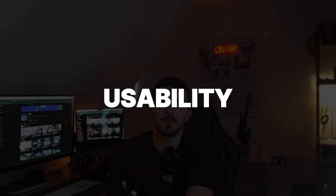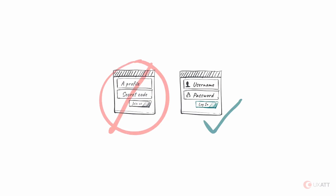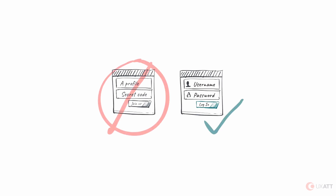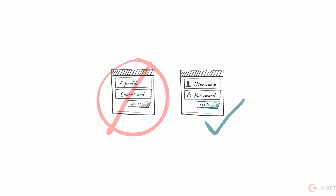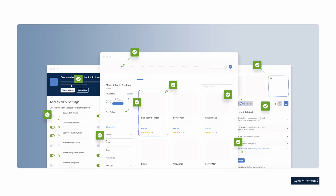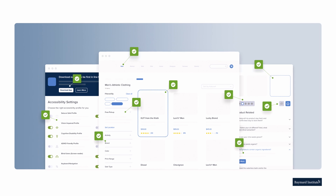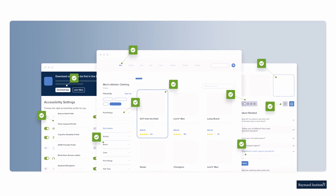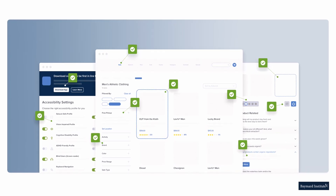Usability. Now listen here — usability isn't just about looks. It's about ease, actually. Usability is essentially how effectively a user can interact with a product to achieve their goals within a certain context.